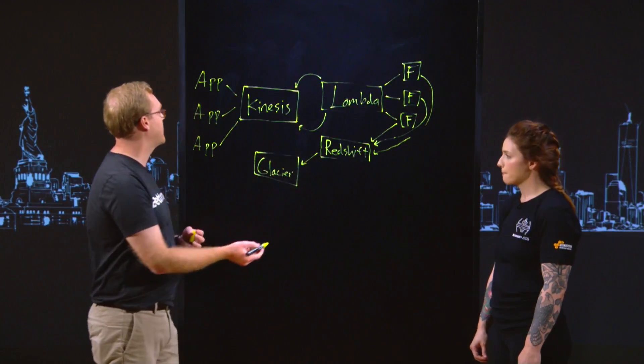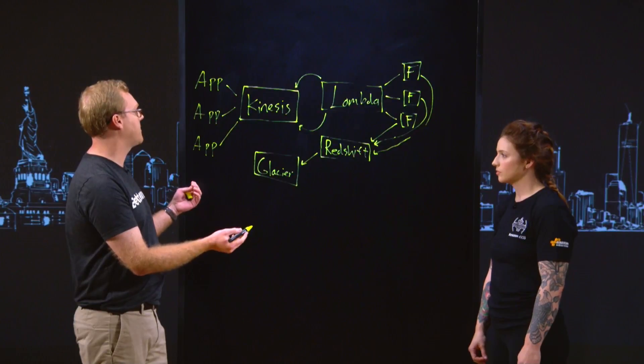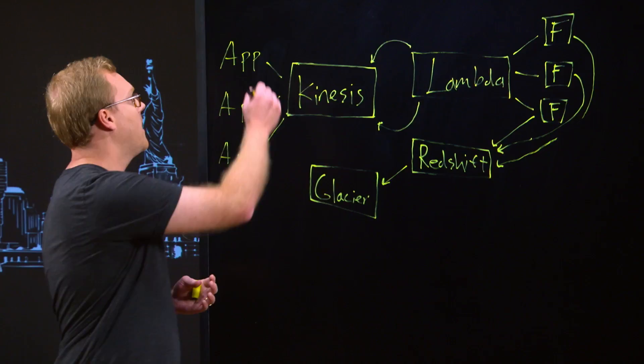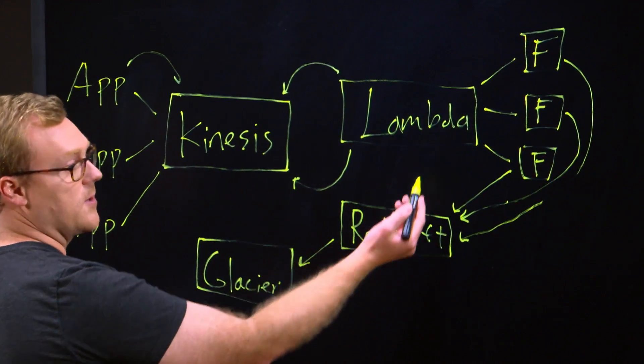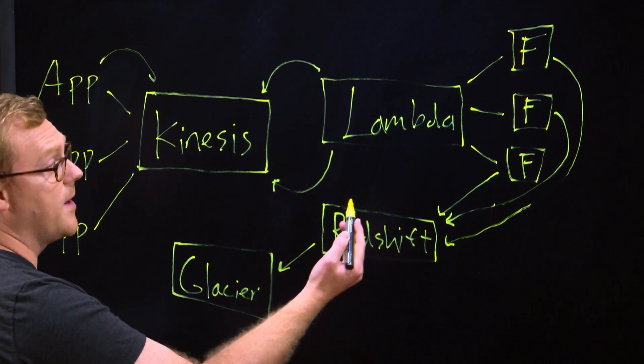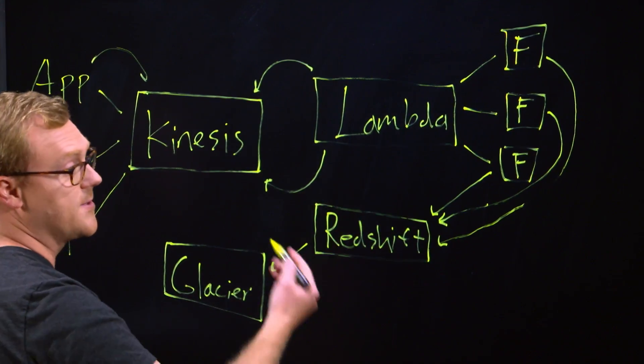So you can imagine if we decided a new thing was coming in, we'll say we wanted to start recording application logins. If this new event is coming in here, the Lambda will actually check to see if there's a corresponding Firehose stream. And if there's not one, it will provision a new Firehose to take on that stream.